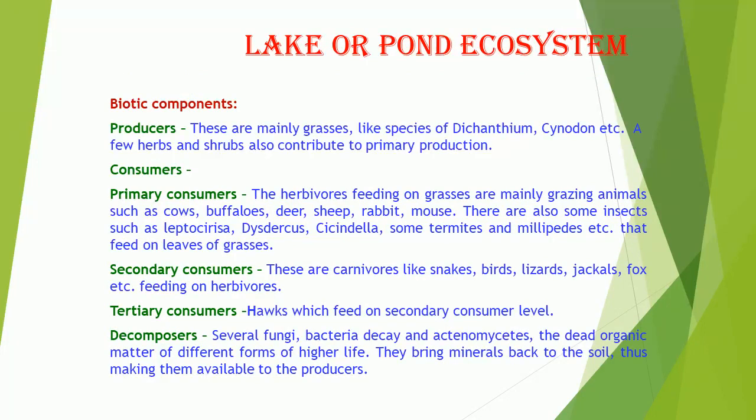Biotic Components. Producers: These are mainly grasses like species of Dichanthium, Cynodon, etc. A few herbs and shrubs also contribute to primary production. Primary Consumers: The herbivores feeding on grasses are mainly grazing animals such as cows, buffaloes, deer, sheep, rabbit, and mouse. There are also some insects such as Leptocorisa, Dytiscus, Cicindela, some termites, and millipedes that feed on leaves of grasses.